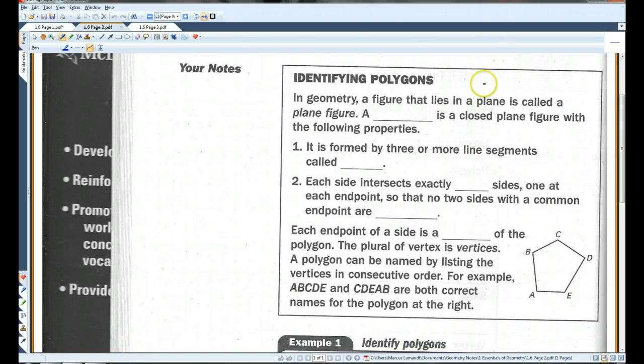In geometry, a figure that lies in a plane is called a plane figure. A polygon is a closed plane figure with the following properties. It is formed by three or more line segments called sides. This is kind of a repeat of the previous page.